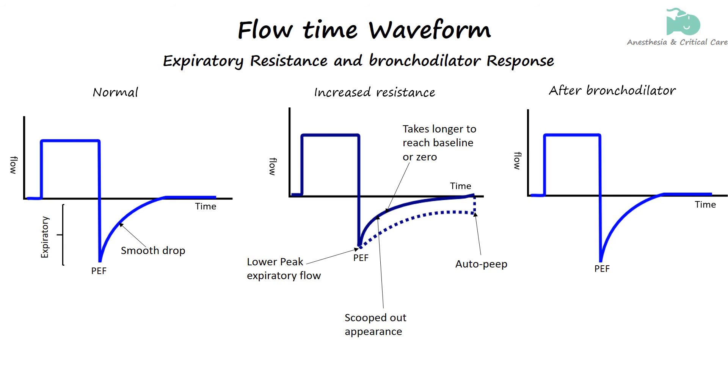Bronchodilators are used to reduce airway resistance when this happens. After bronchodilator administration, the peak expiratory flow rate increases indicating that the patient can exhale more forcefully and quickly due to reduced airway resistance. The duration of the expiratory phase decreases suggesting that the airways are more open allowing for more efficient exhalation. If the waveform had a scooped out appearance due to prior bronchoconstriction, the concavity is reduced making the waveform more linear.